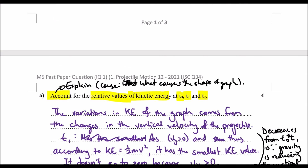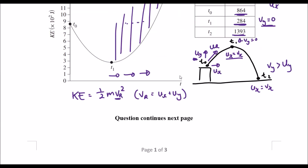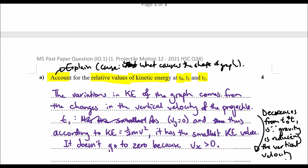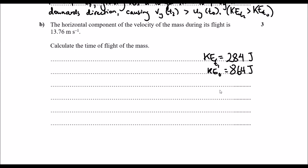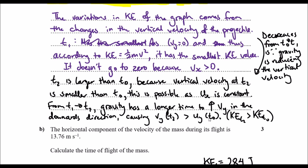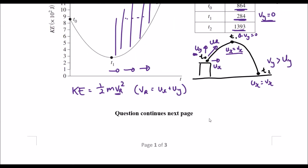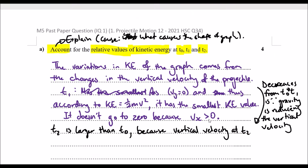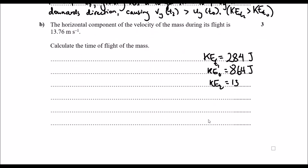Let's also write down the value at t2: the KE at t2 is 1393 joules. What we'll need to know is what the resultant velocity was at the start, and also what the final resultant velocity was at the end.